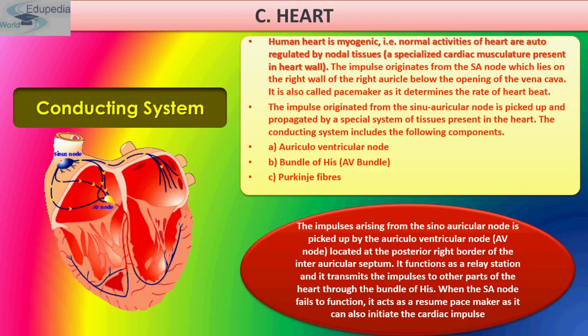The wave of contraction which starts at the SA node spreads over both auricles at the rate of 1 meter per second. There is another mass of neuromuscular tissue called the atrioventricular node, or AV node, which is placed at the base of the inter-auricular septum near the atrioventricular valve.